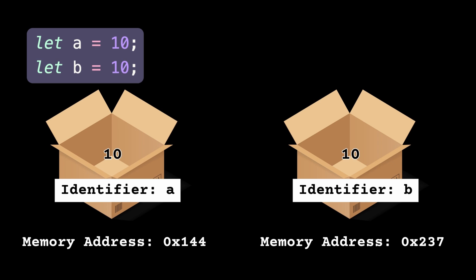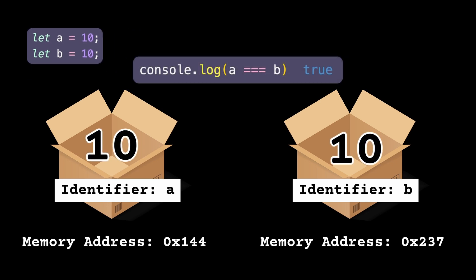So a and b are two different variables that exist at different locations in memory, but both hold the same value 10. However, when you compare two variables that hold a primitive data type, the values are compared. If you do a === b, the value 10 will be compared to the value 10, and this will print true.